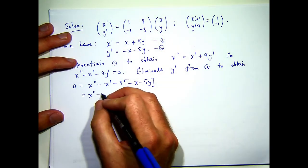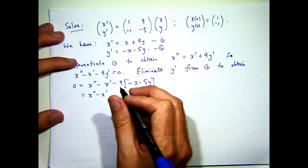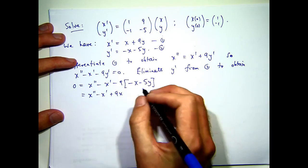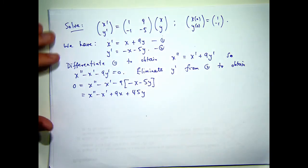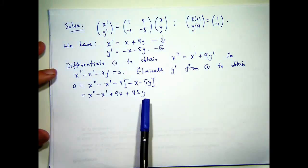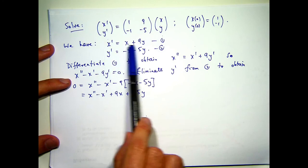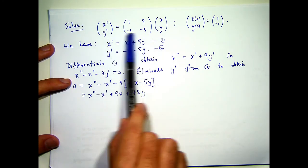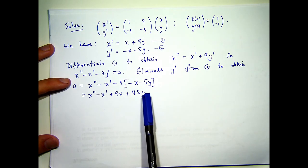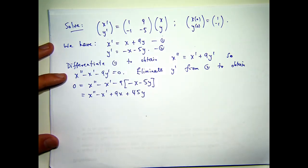So if I expand that bracket out, I'll get something like this. Now, what I can do is use equation 1, just rearrange it. So make y the subject in equation 1, and replace y down here with x and x primes.